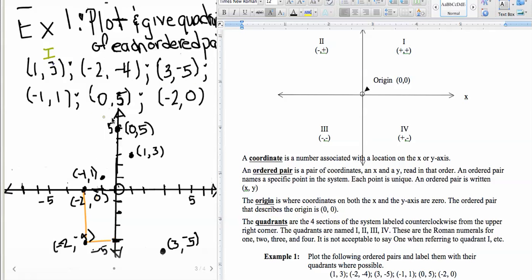And then our second ordered pair here, negative 2, negative 4, it's going to be labeled in our third quadrant. And I think I'm going to run out of time, but you're getting the point, I hope. And you notice that I'm putting in quadrants with Roman numerals. And then (3, negative 5), that's in the fourth quadrant. That's 4 in Roman numerals, and 4 in Roman numerals looks like i and then a v.